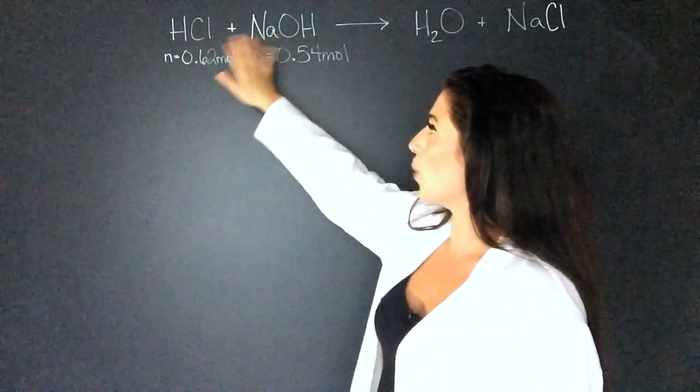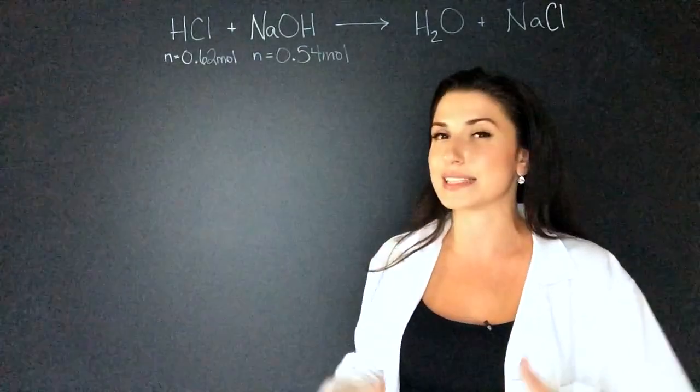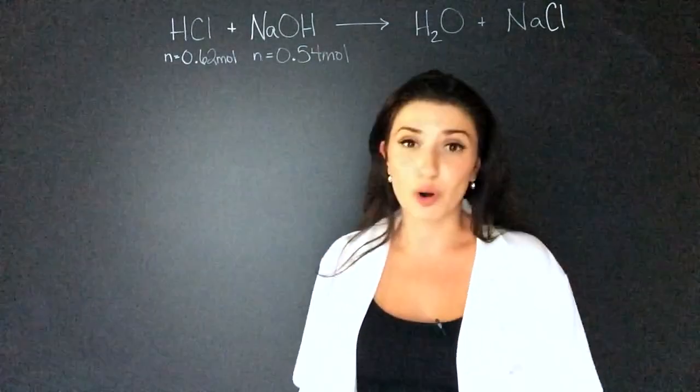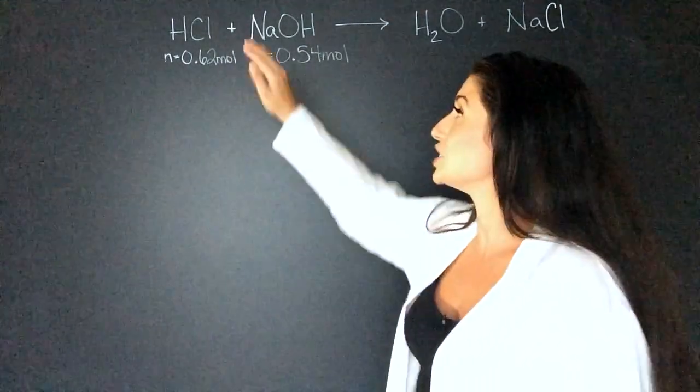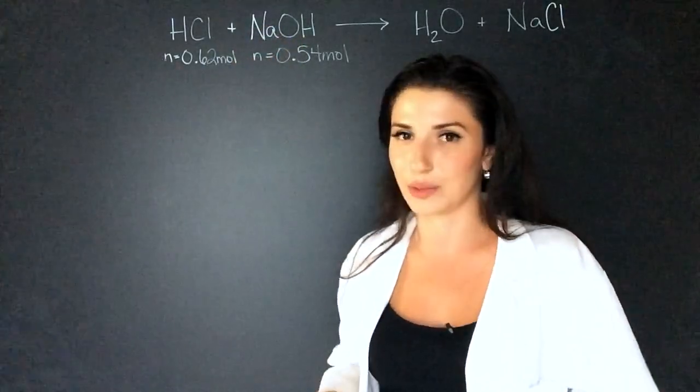Because these are a one-to-one ratio, we can just look at the moles. And this is why this is an easy problem. Tomorrow, we're going to go over equations that don't have ones in front, and that makes the question a little more complicated.